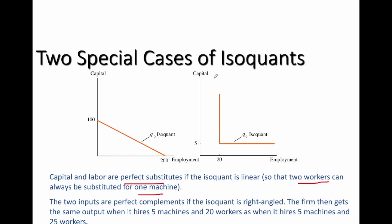On the other hand, in the right diagram, this is the extreme case where capital and labor are perfect complements. To produce Q0 level of output, the firm can use five capital and 20 workers, or five capital and 25 workers, or even five capital and 40 workers — all those combinations still give the firm Q0 level of output.